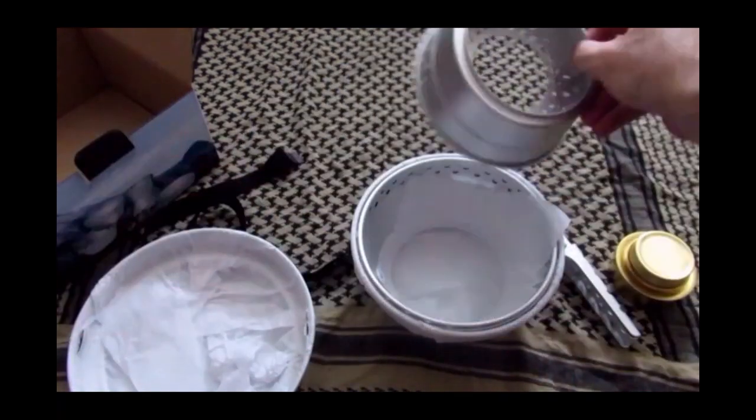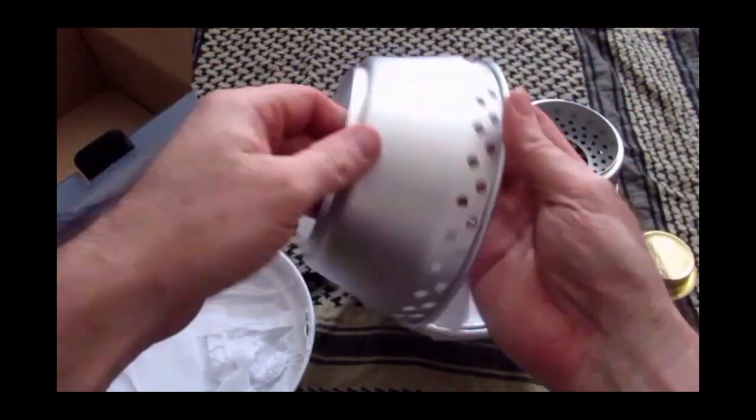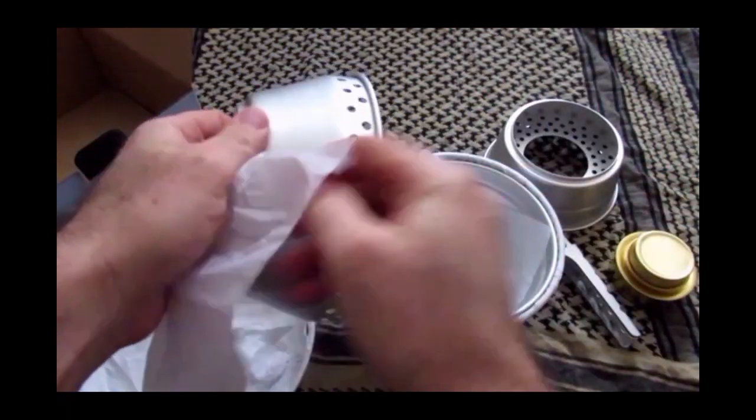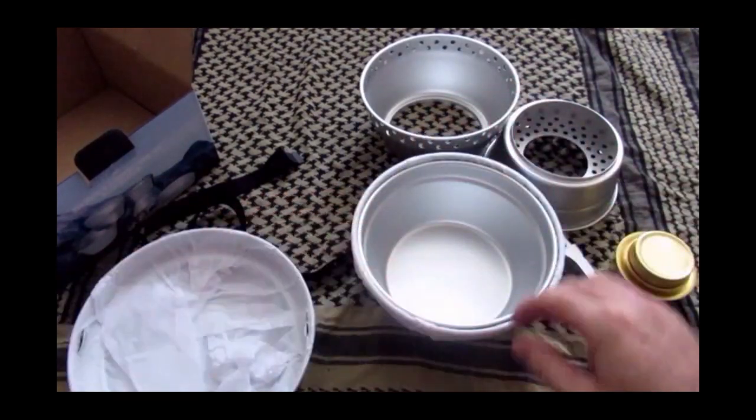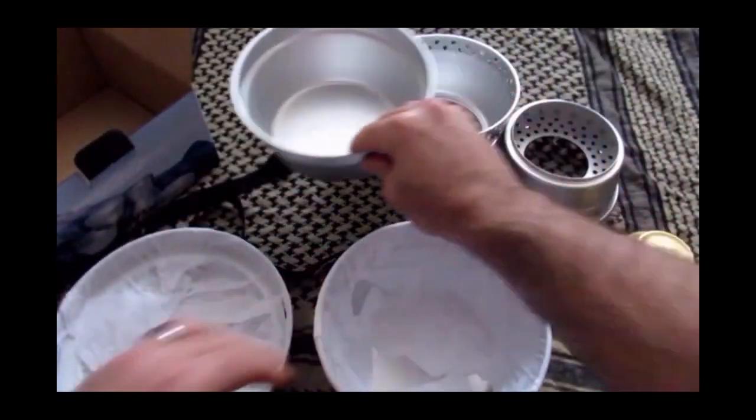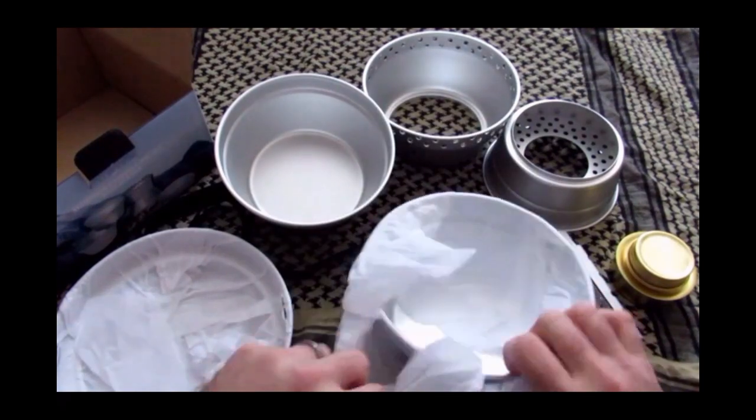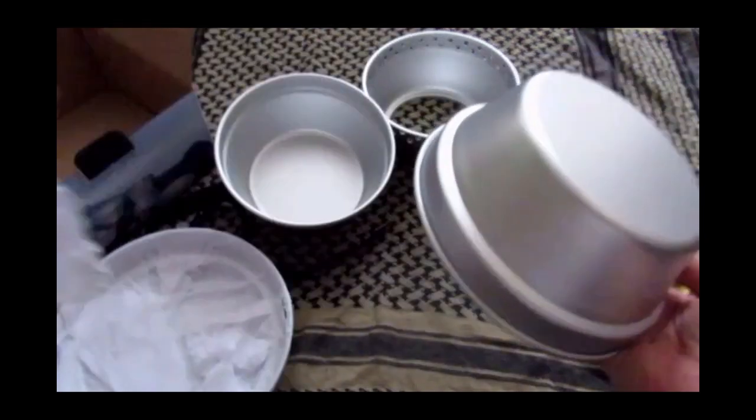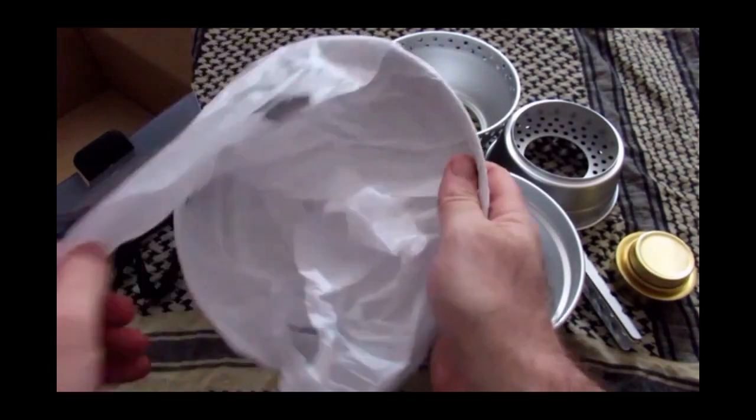Here's the base of the storm shield and obviously the top half of the storm shield. It also doubles up as the pot holder. Here's our first pot, and obviously the base is also the second pot. And the lid doubles up as a frying pan.